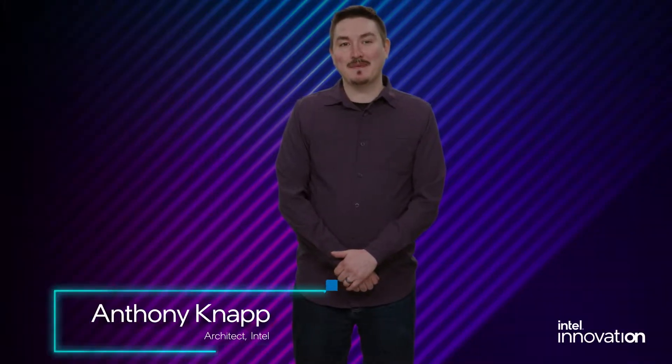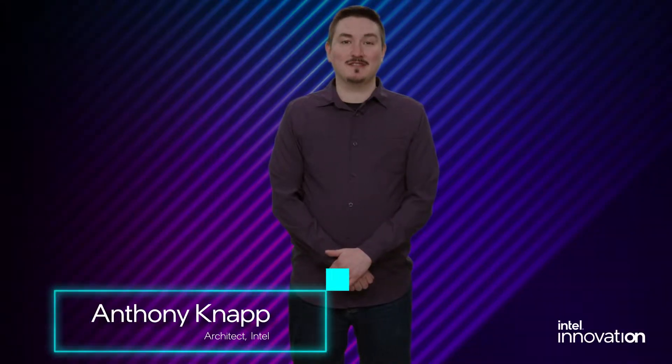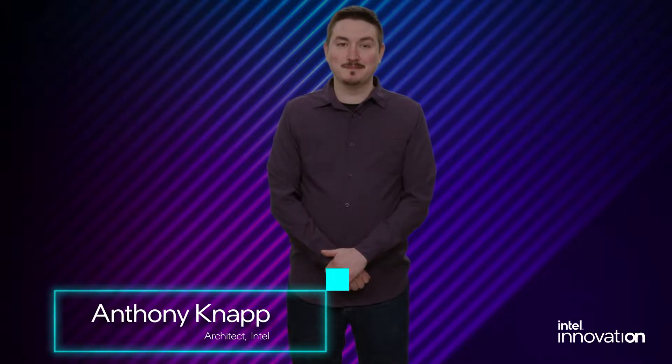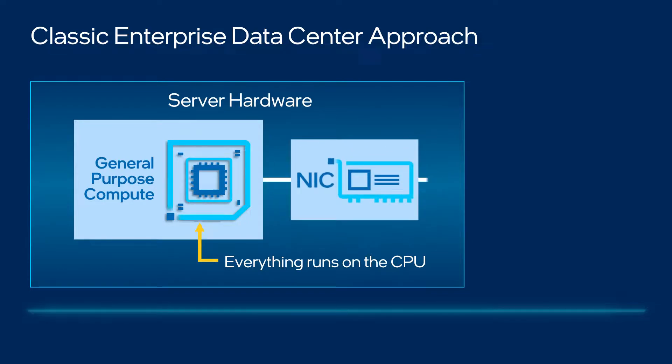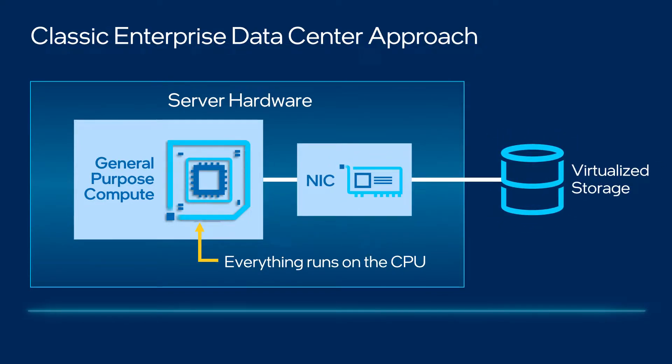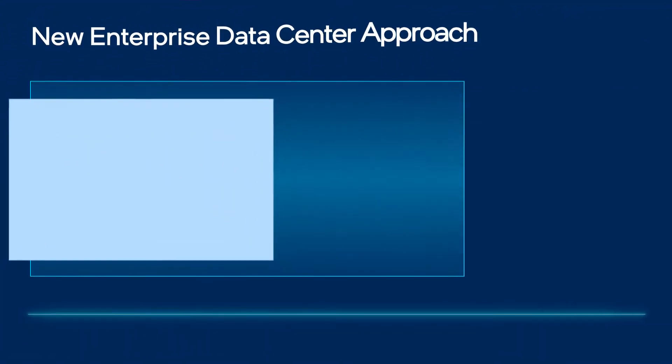Hi, my name is Anthony Knapp and I'm an architect focused on disaggregated storage at Intel. With the predominance of cloud native applications and highly virtualized environments, a significant amount of server resources are expended processing tasks beyond user applications. Some examples are hypervisors, container engines, network and storage functions. To address this challenge, Intel has introduced a new class of product called the Infrastructure Processing Unit, or IPU.